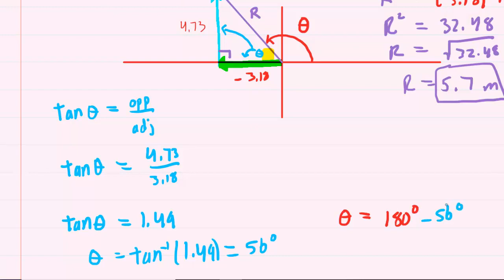And when you work that out, you're going to get approximately 124 degrees. So that would be the final answer to part C. That is the angle that the resultant makes with the positive x-axis.